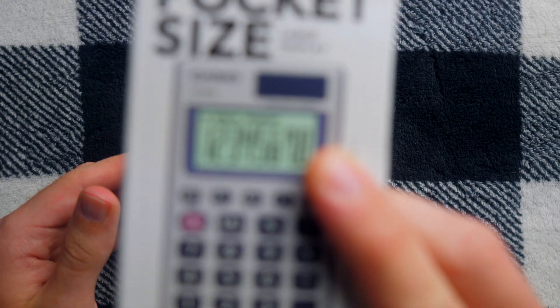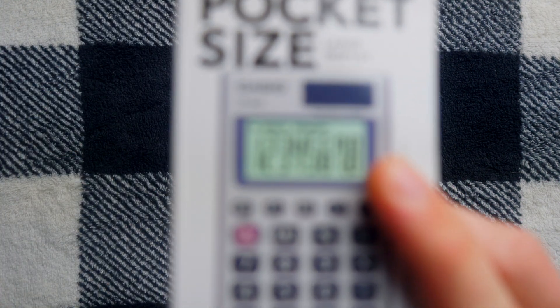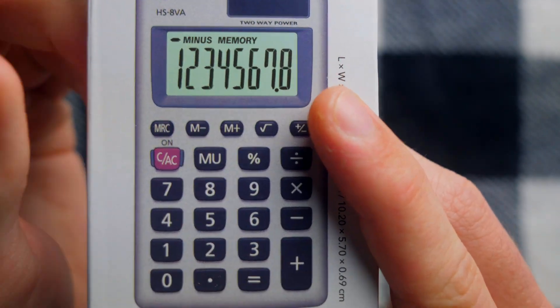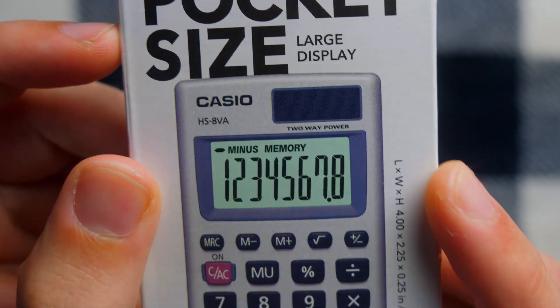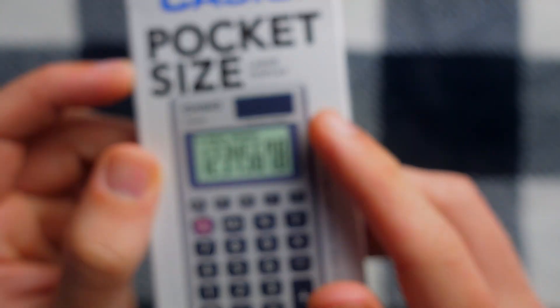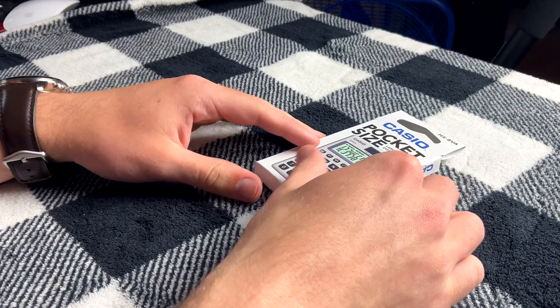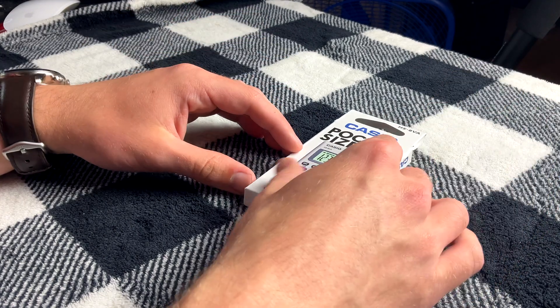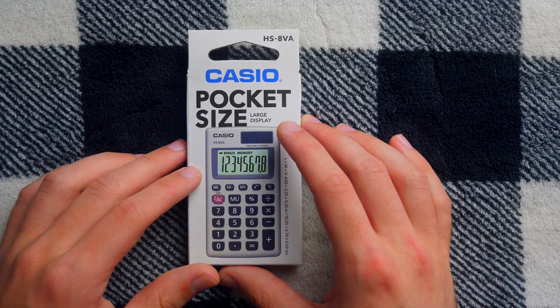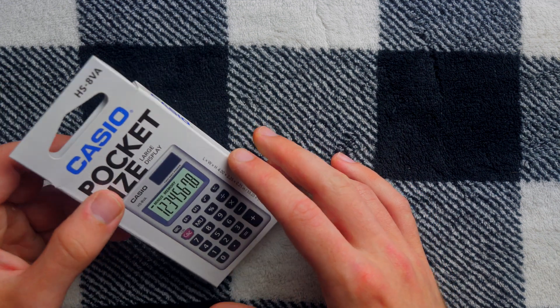It says it has two-way power there on the box. Two-way power means that it's got solar power and it's got a backup battery. Presumably the backup battery is included, but I suppose it's possible that it isn't.